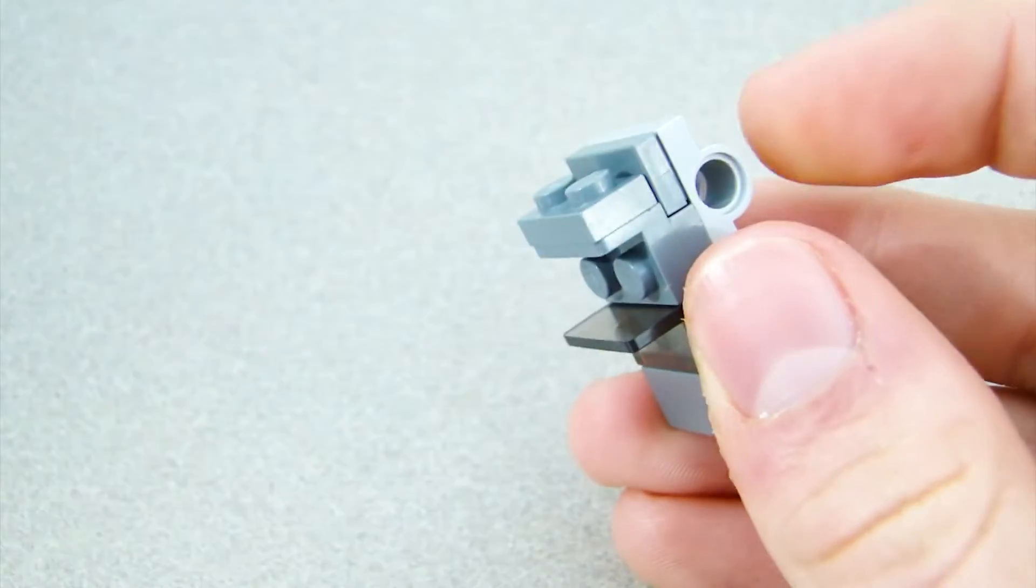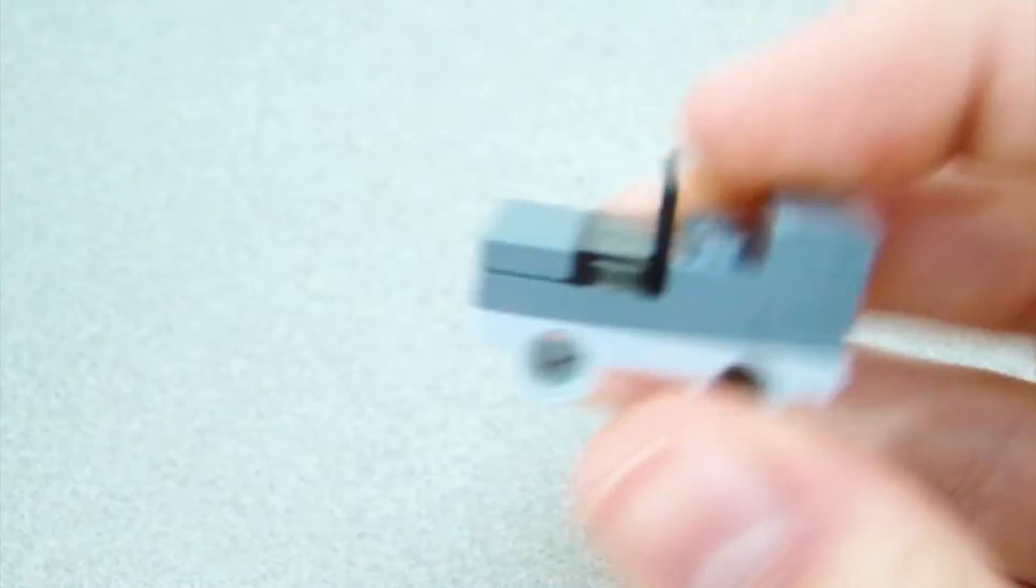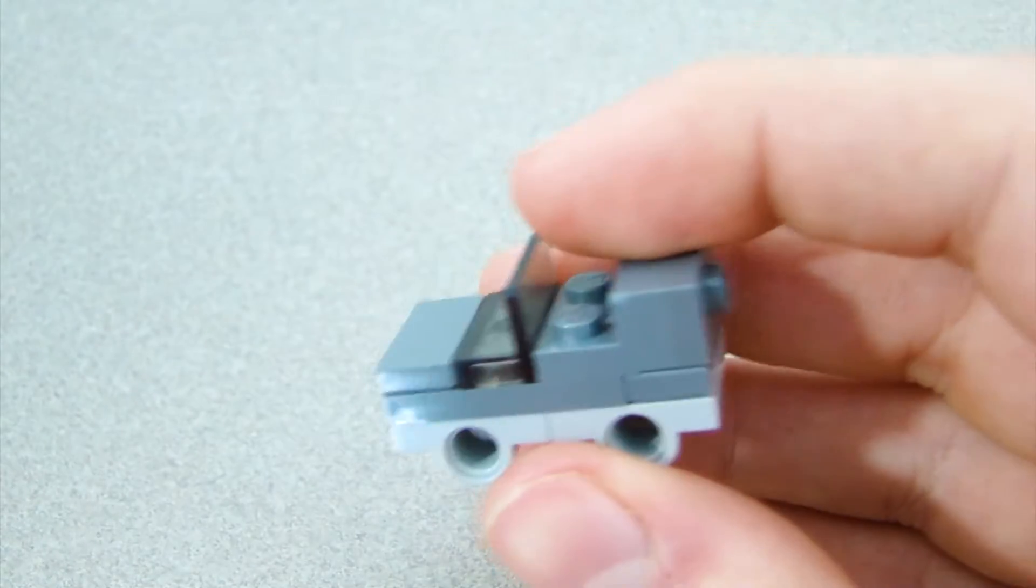Then on those two studs, just put this sideways piece on there. Put a 1x2 with the jumper plate. And now, basically everything's done.